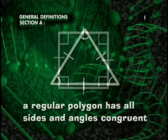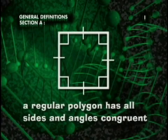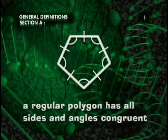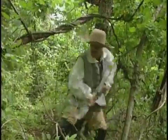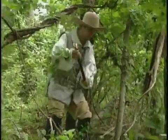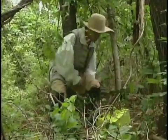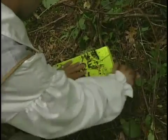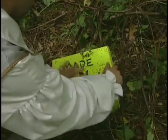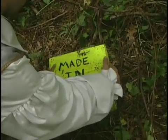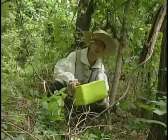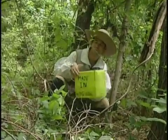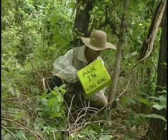A regular polygon has all sides and angles congruent. We seldom find regular polygons in nature. Most regular polygons are man-made, like this perfectly square man-made shape shown here.